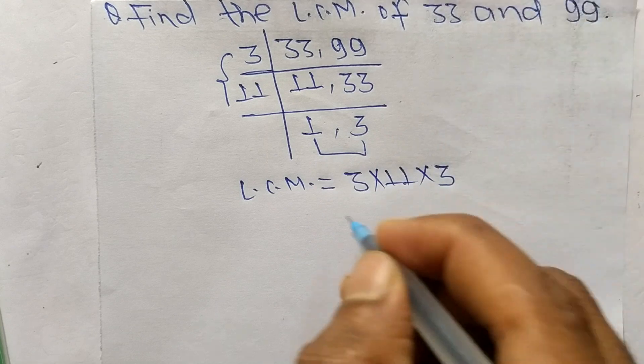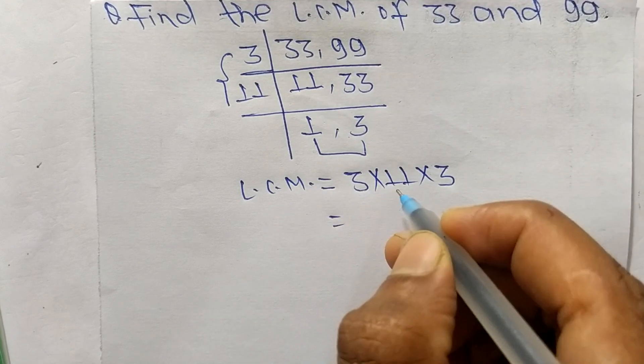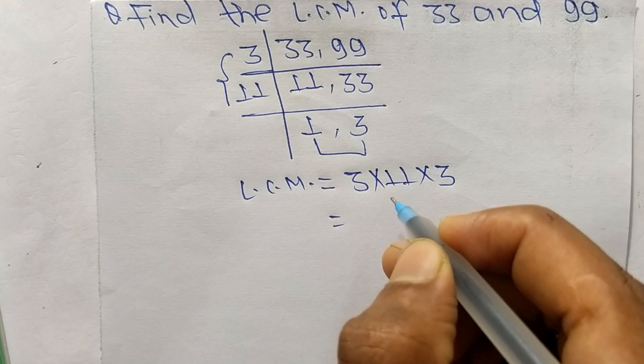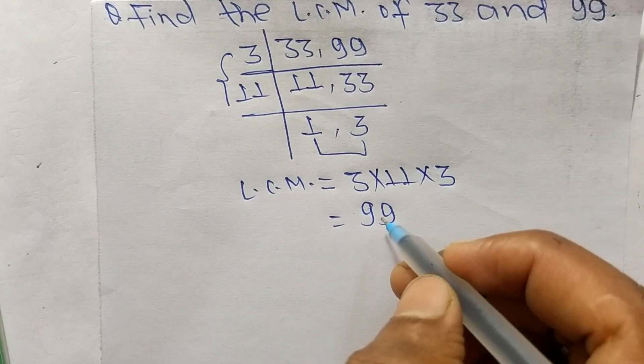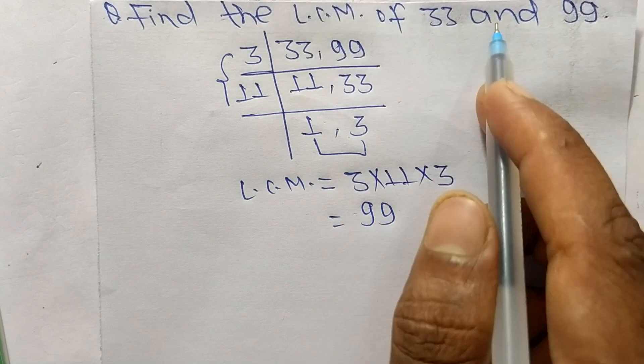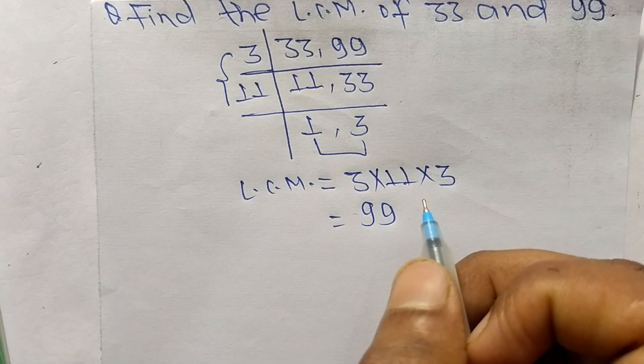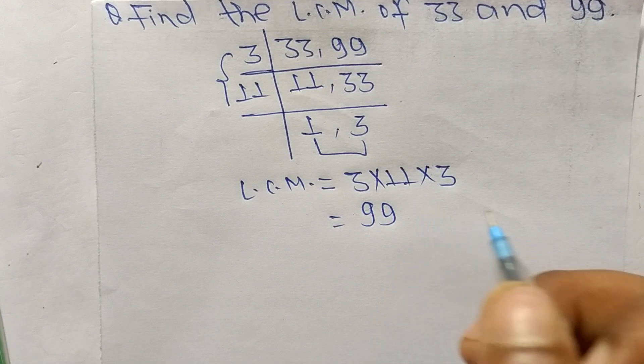So 3 times 11 means 33, 33 times 3 means it is 99. So 99 is the LCM of 33 and 99. So this much for today and thanks for watching.